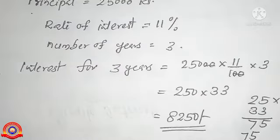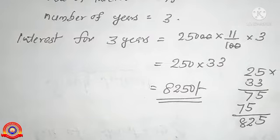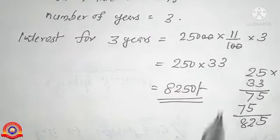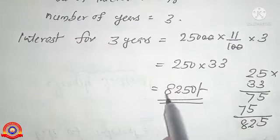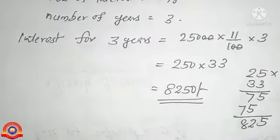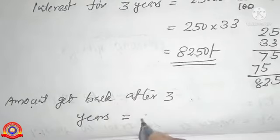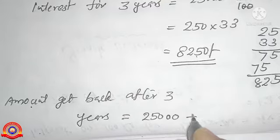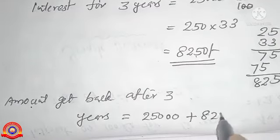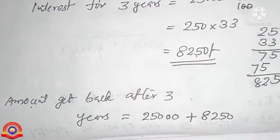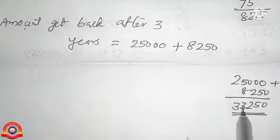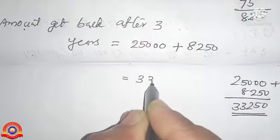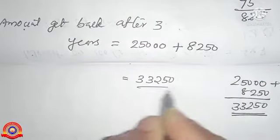The amount get back after three years is equal to principal plus interest, that is 25,000 plus 8,250, which is equal to 33,250 rupees. So amount get back after three years is equal to 33,250 rupees.